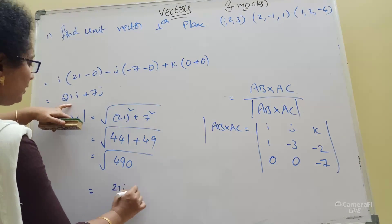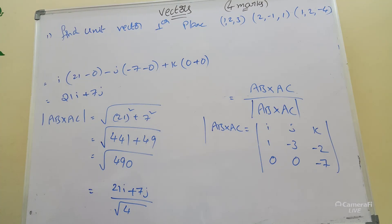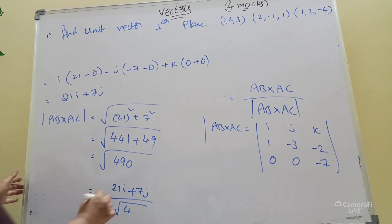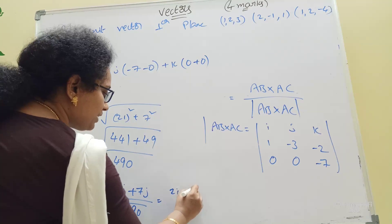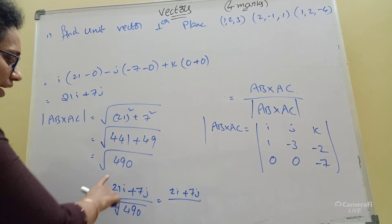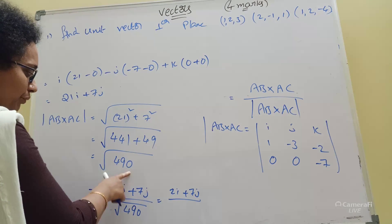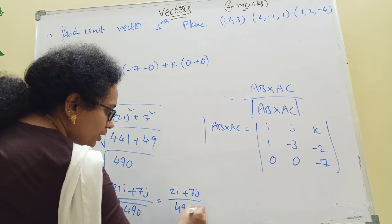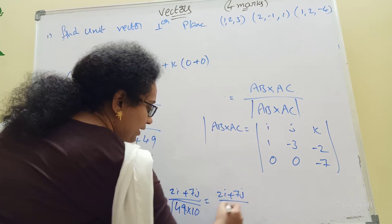Unit vector equals 21i plus 7j divided by root 490. We can split 490 as 49 into 10, so root 490 equals 7 root 10. Therefore unit vector equals 3i plus j divided by 7 root 10, or equivalently 21i plus 7j by 7 root 10.